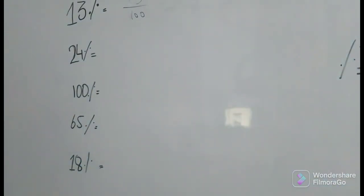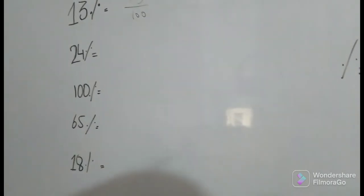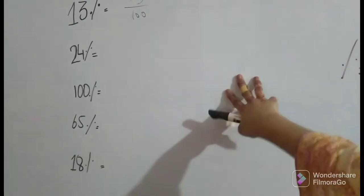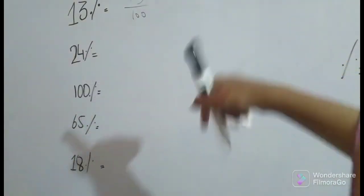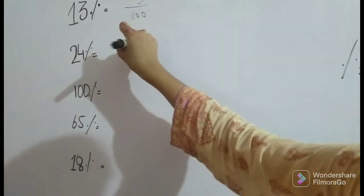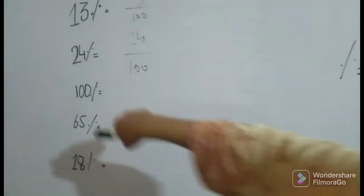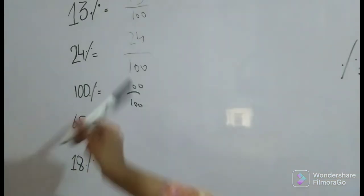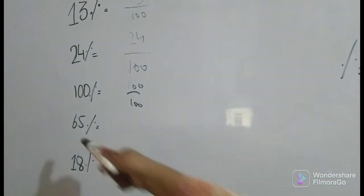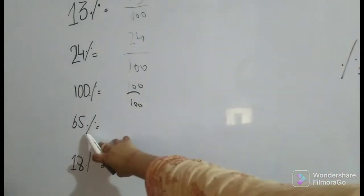Same goes to the other one: 24% - denominator would be 100 and numerator will be 24. 100%, 65% would be 65 over 100. Why are we writing 100? Because percent is equal to 1 over 100.